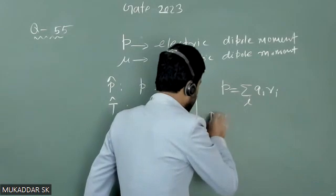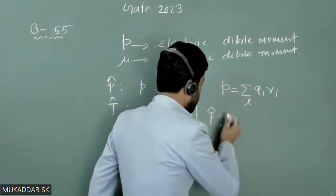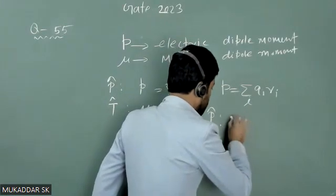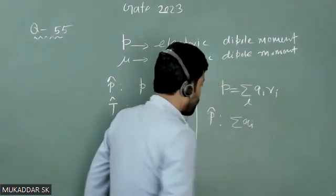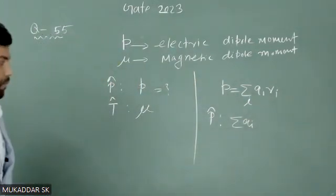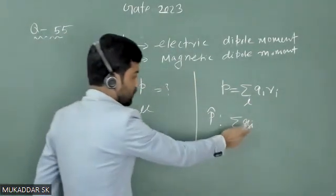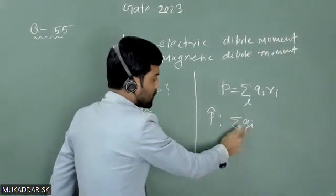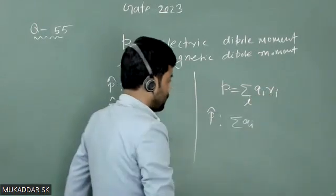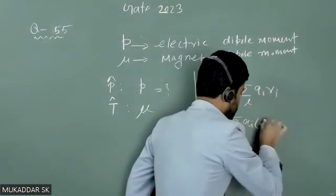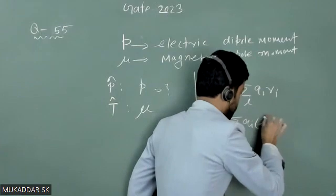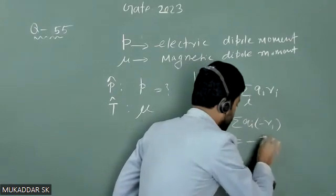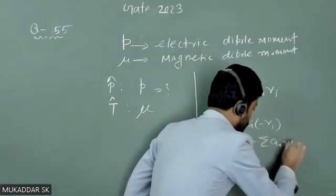Now, under the action of parity, Q_i will not change its sign because charge is a scalar quantity — charge will not change its sign under parity. However, the position vector R_i will change its sign. So we get minus Q_i R_i.